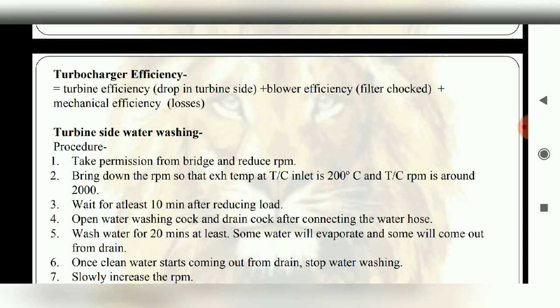First of all, turbine efficiency, second blower efficiency and third mechanical efficiency. If there is fouling in the turbine side, such as carbon deposits on turbine blades and nozzle ring, then the efficiency is dropped.